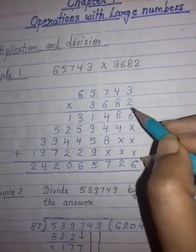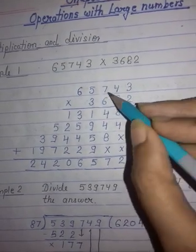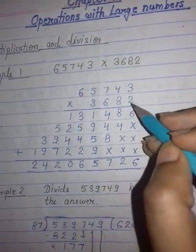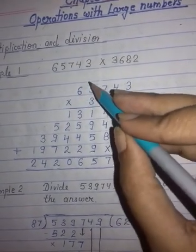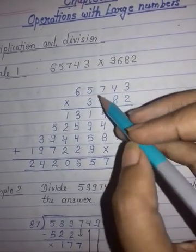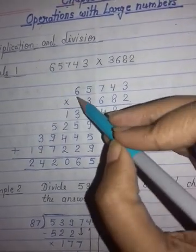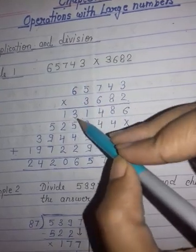2 times 3 is 6, 2 times 4 is 8, 2 times 7 is 14. You will write 4 here, carry is 1. 2 times 5 is 10, 10 plus 1 equals 11. Write 1 here, again carry 1. 2 times 6 is 12, 12 plus 1 equals 13.